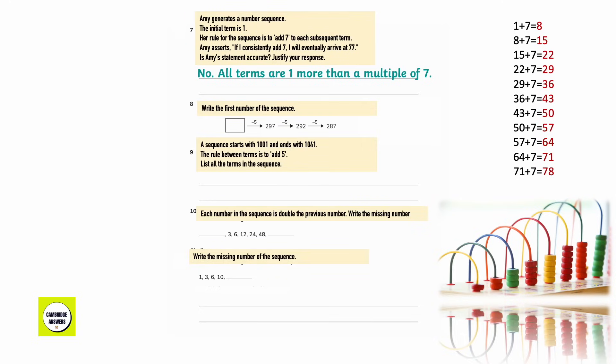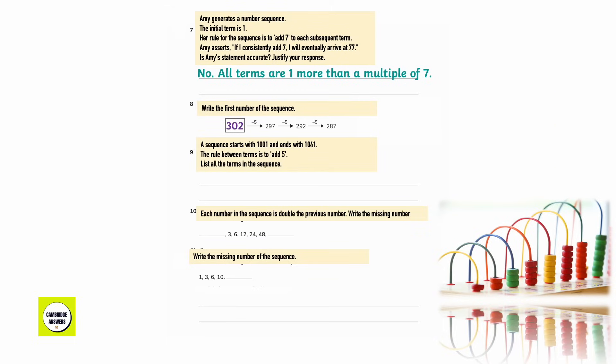Here is a part of a number sequence where the first number is missing. Remember to work backwards. Write the missing number: 287 plus 5 gives 292, 292 plus 5 gives 297, and 297 plus 5 gives 302. A sequence has the first term 1001 and the last term 1041 with the term-to-term rule add 5. Write down all the terms in the sequence.